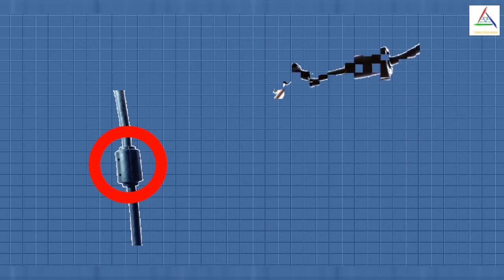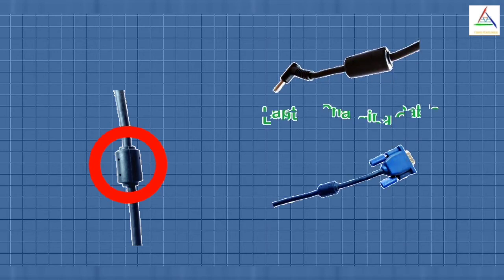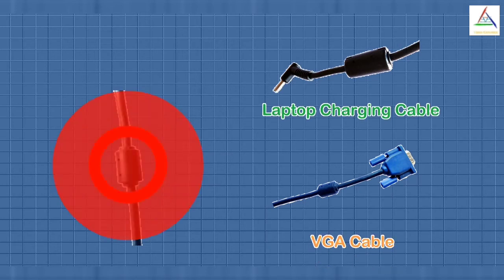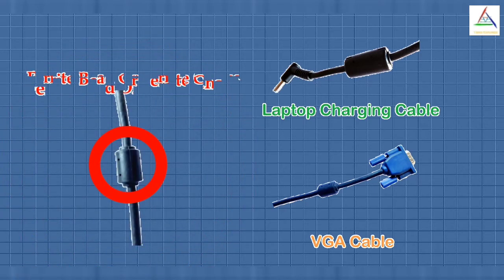You would have seen a small cylindrical shape on your laptop charging cables, VGA cables, monitor cables, or on other external cables. These cylindrical shapes are called ferrite beads or ferrite chokes. Let's get started to learn about them.